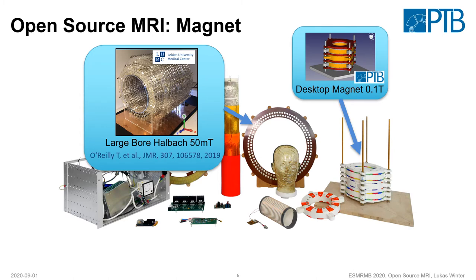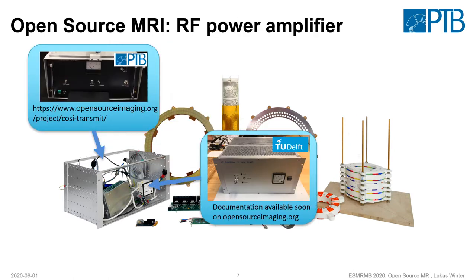Here are two examples for the magnet. In Berlin we are working on a small desktop magnet — 10 centimeter bore, around 3 to 4 centimeter field of view — and in Leiden there is a large bore Hallbach magnet which was already used for head and knee imaging. We also have some RF power amplifier designs, one kilowatt peak power each. On the left is a design we did initially in Berlin, and here is a newer design by the Technical University of Delft where the documentation will be available soon.